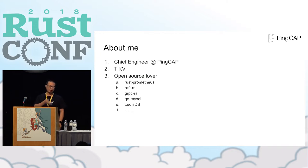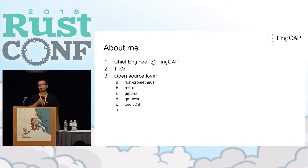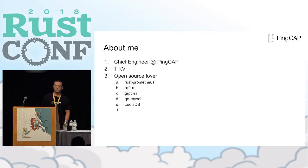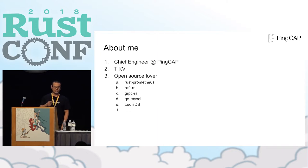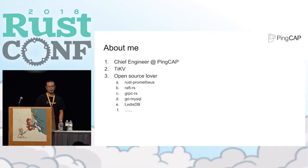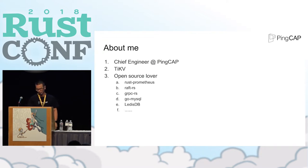And based on TiDB, we have built a distributed transactional key-value database. We call it TiKV, and it's written in Rust. In my spare time, I'm also an open source developer and have developed some open source projects — including the Raft library I will talk about today — and others.